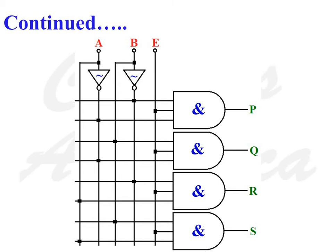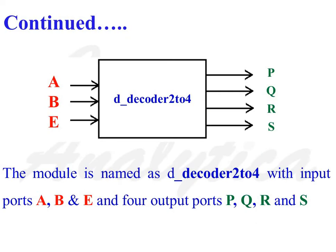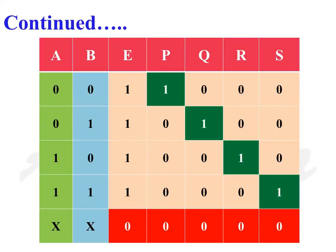This is the internal diagram of a 2-to-4 decoder. It consists of two NOT gates and four AND gates. This is the external view of the 2-to-4 decoder. The module is named D_decoder_2to4 with input ports A, B, and E and four output ports P, Q, R, and S. This is the truth table of a 2-to-4 decoder.